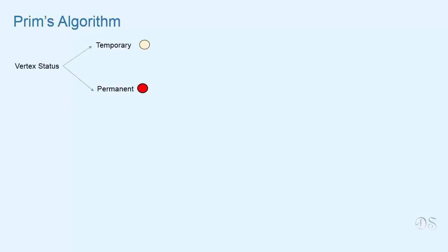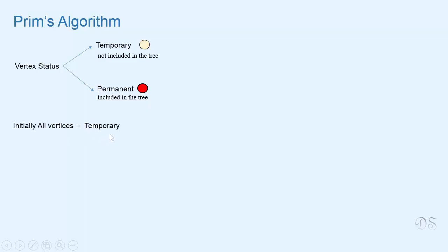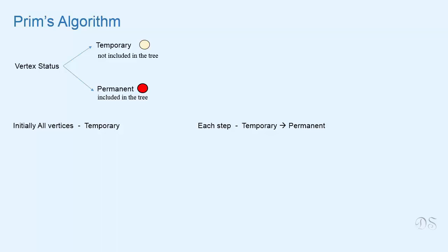We will give each vertex a status. If a vertex is temporary, it means that it has not been included in the spanning tree, and if a vertex is permanent, it means that it has been included in the spanning tree. Initially, all vertices will be temporary and at each step of the algorithm, we will make a temporary vertex permanent. The process stops when all the vertices become permanent, that is, when all the vertices are included in the spanning tree.